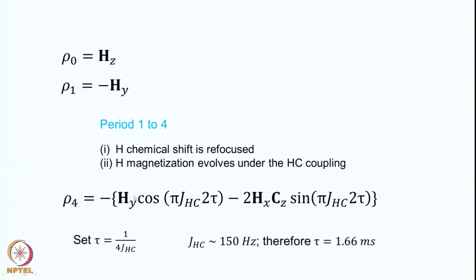We will directly write ρ4 because we do not consider chemical shift evolution — it is refocused. From ρ1 to ρ4 we consider only evolution under the coupling Hamiltonian between proton and carbon. The result is that Hy evolves as: ρ4 = Hy cos(πJ_HC · 2τ) − 2Hx·Cz sin(πJ_HC · 2τ). The term 2HxCz represents antiphase magnetization of proton with respect to carbon, and Hy is the in-phase proton magnetization. Here J_HC is the coupling constant between proton and carbon.